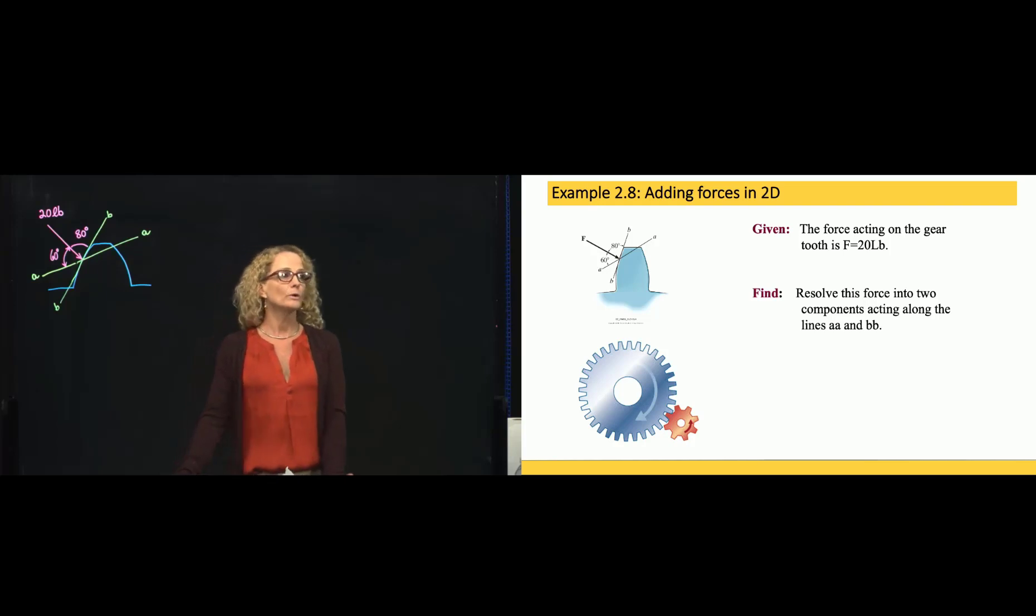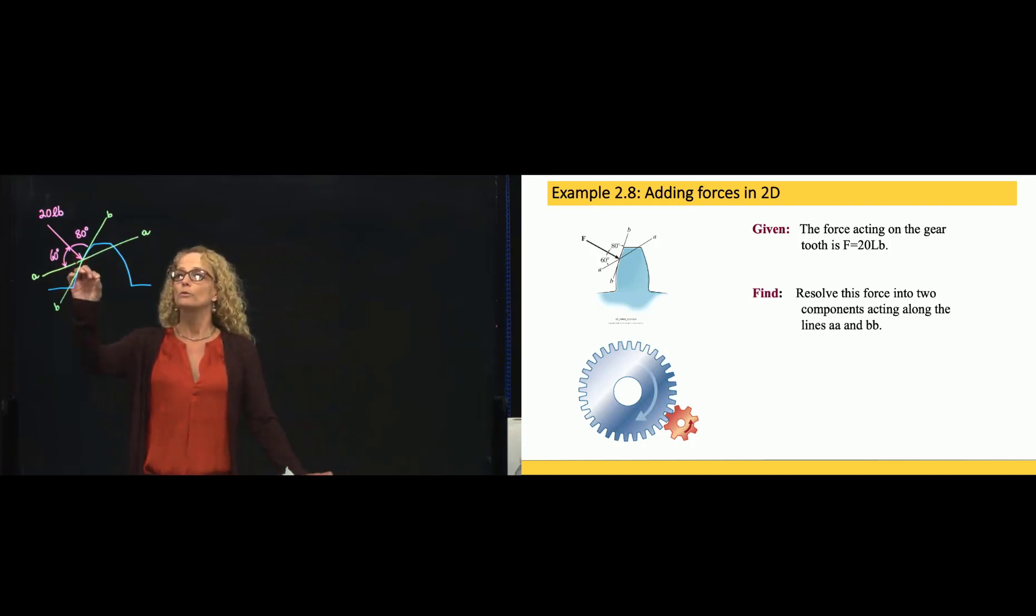In this case, we have the force produced by a torque over the teeth of a gear that is 20 pounds. And we want to find the components of that force along the BP direction and along the AA direction.